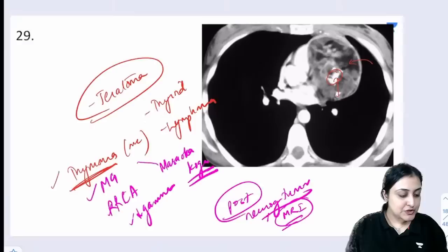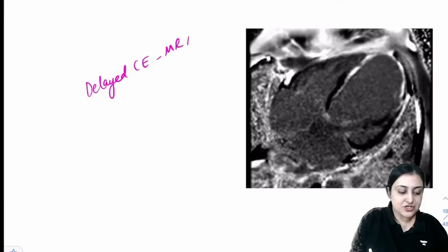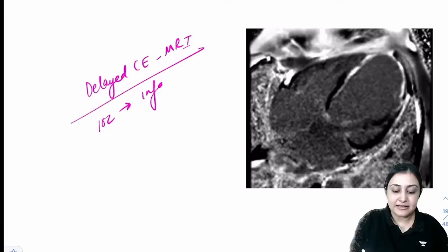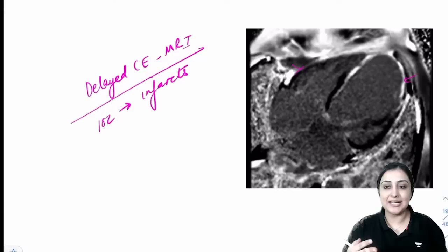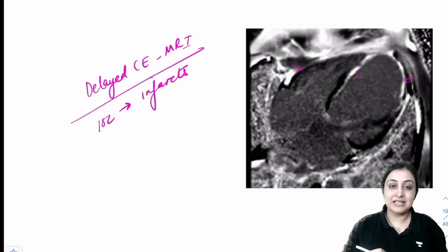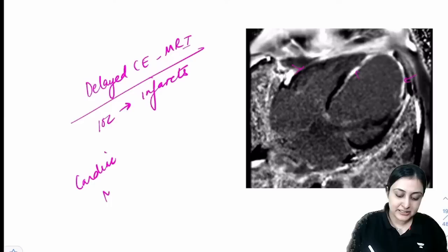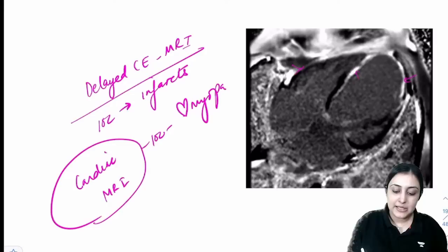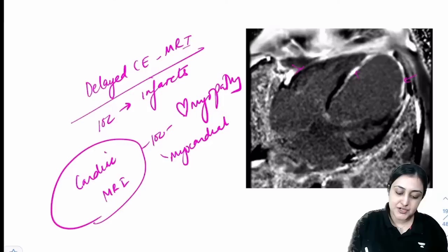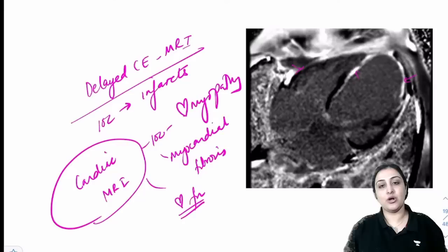Delayed contrast-enhanced MRI of the heart: investigation of choice for picking up infarcts. At 10 minutes post-contrast, normal tissue loses contrast but infarcted tissue retains it (white = infarct, no efflux). Cardiac MRI is now the gold standard for: cardiomyopathy, myocardial fibrosis, cardiac function assessment, and detecting infarcts.